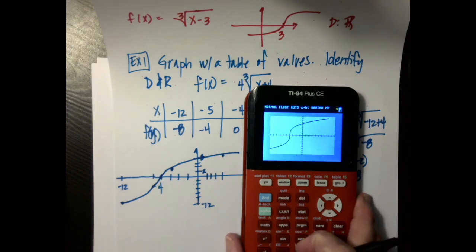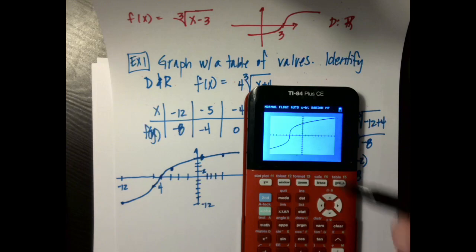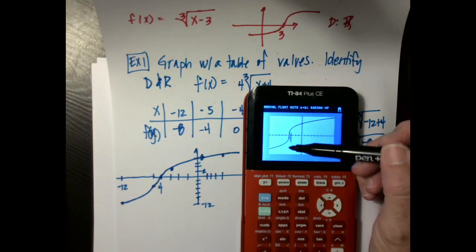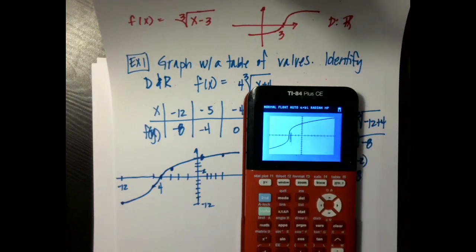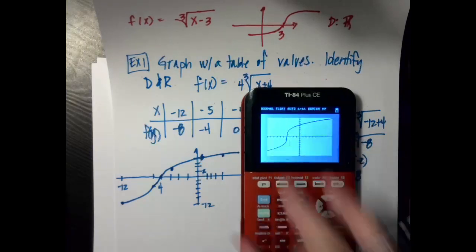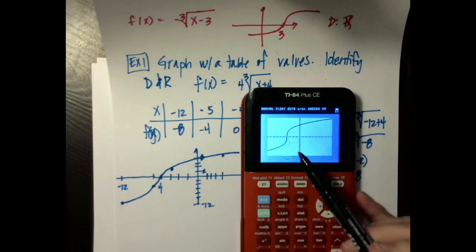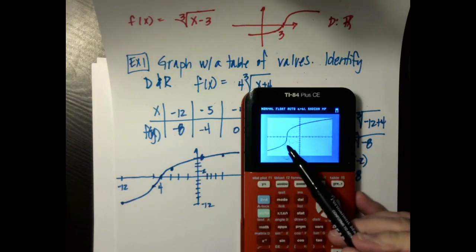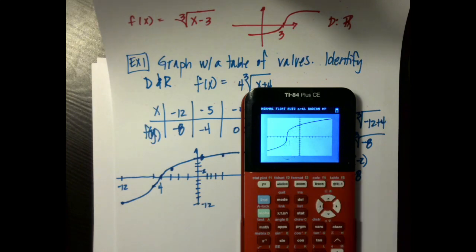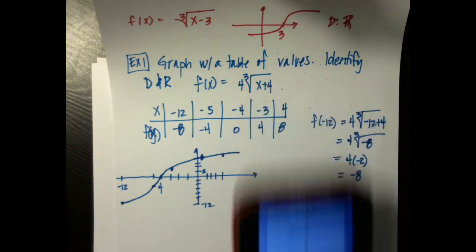One interesting thing about this graph — and we'll talk about it when we get to calculus — is this vertical piece of the graph, which has interesting ramifications when we start talking about calculus. But for right now, we're just good to go with the graph.